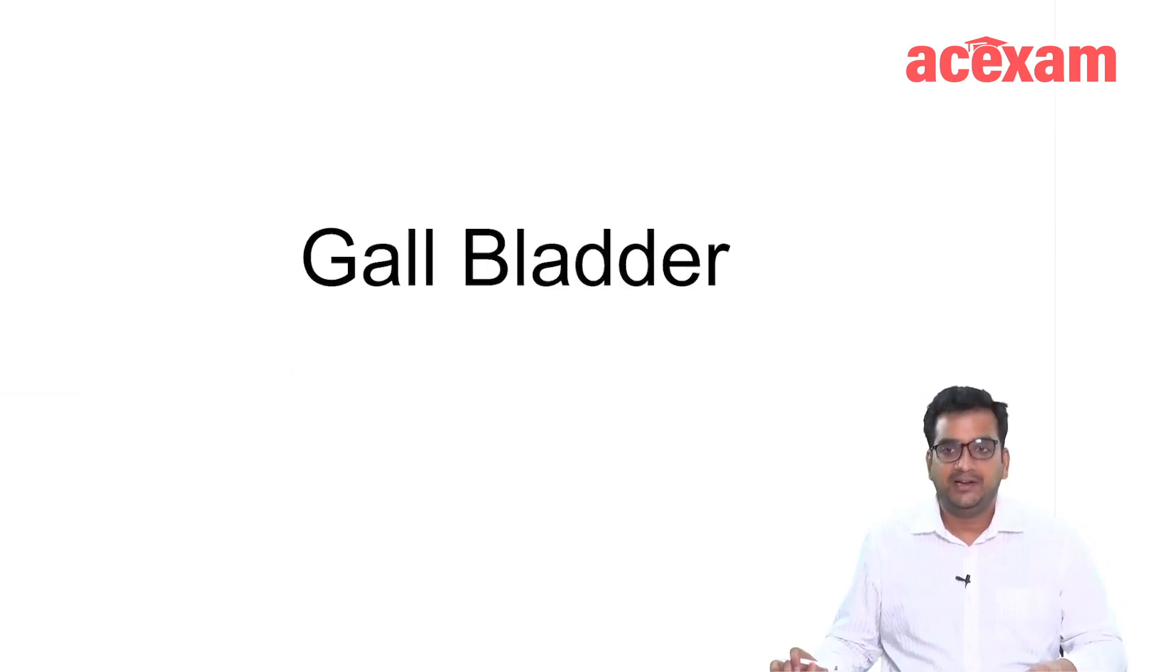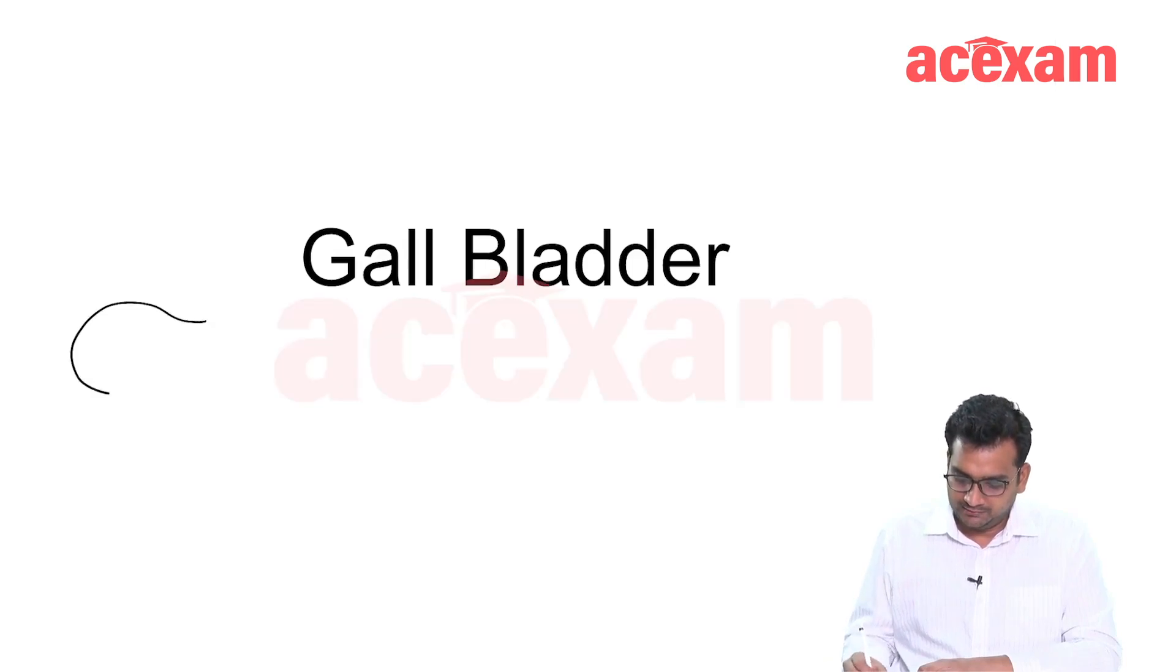Now the next topic is gallbladder. Gallbladder is a structure which joins the common hepatic duct with cystic duct and it forms CBD. This is gallbladder, this is cystic duct, this is common hepatic duct and this is CBD.